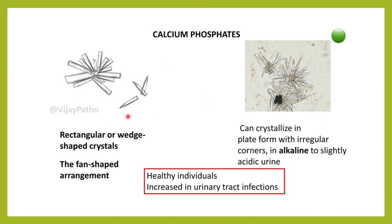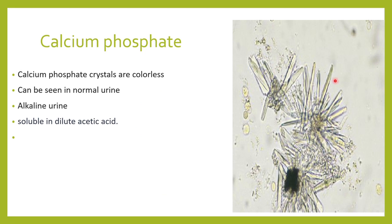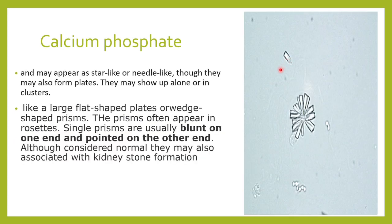Remember, calcium phosphate crystals can be rectangular or wedge shaped. Most of the time they have a fan-like arrangement — like a ceiling fan — all clumped together. Here they have crystallized in a plate formation with irregular corners. These crystals are seen in alkaline urine with high pH. They are colorless, needle-shaped or wedge-shaped, come in rosettes, and may appear as star-like or fan-shaped arrangements — either broad-based blunt-ended shields or needle shaped.